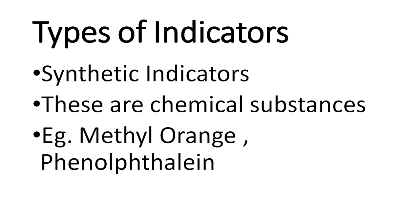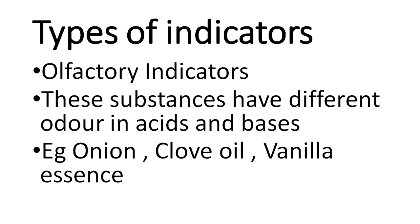The second type is synthetic indicators — chemicals that are synthetically prepared in labs. Methyl orange gives red color in acids and yellow in bases. Phenolphthalein is a colorless substance that gives magenta or dark pink color in bases and remains colorless in acids. The third type is olfactory indicators — they change their smell in acids and bases. Examples are onion, clove oil, and vanilla essence: in acidic medium they have one smell, in basic medium another.